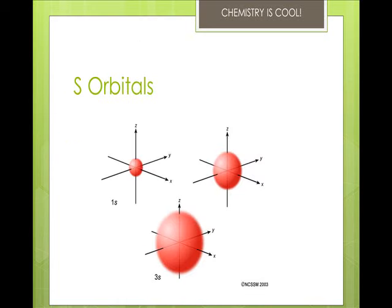There is one s orbital for every energy level. S orbitals are spherically shaped and each s orbital can hold two electrons. They are called the 1s, 2s, 3s, etc., based on the row in the periodic table in which you find the element. So if you're on the hydrogen-helium row, period 1, there's a 1s. If you start on the lithium row, you're in 2s, etc.